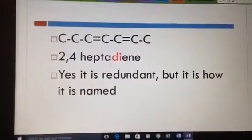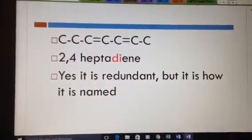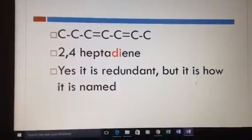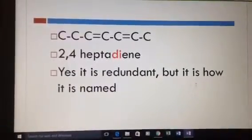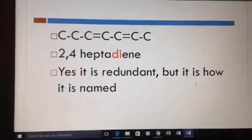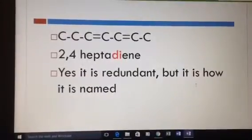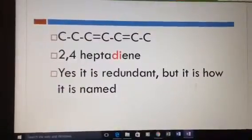I didn't make up the naming system, so we do put that di in there each time we have 2 bonds. If there were 3 bonds, we'd say tri. If there were 4, we'd say tetra. If there were 5, we'd say penta.